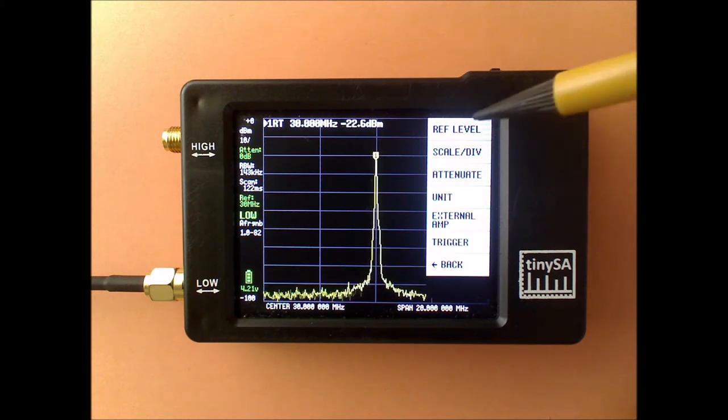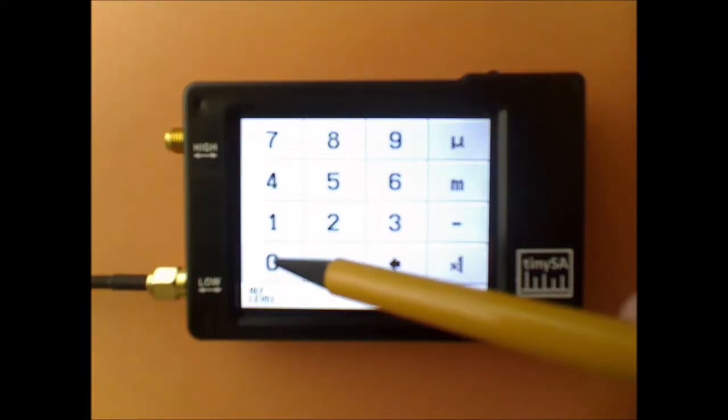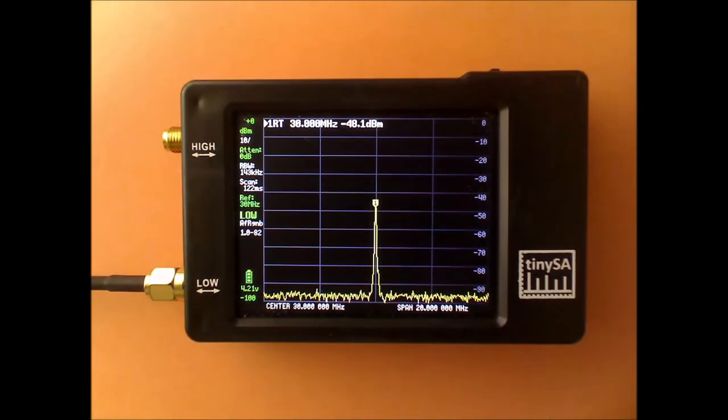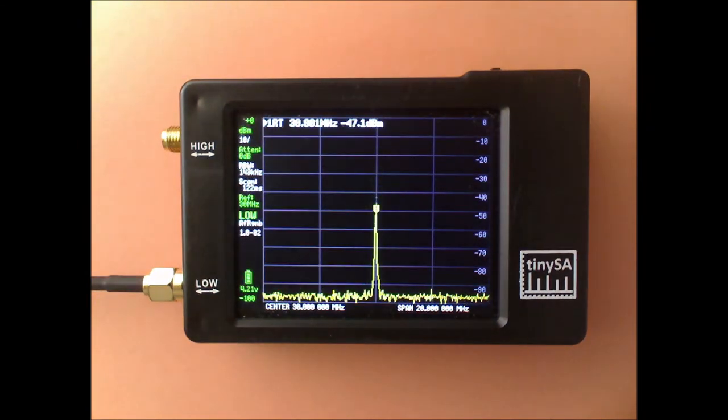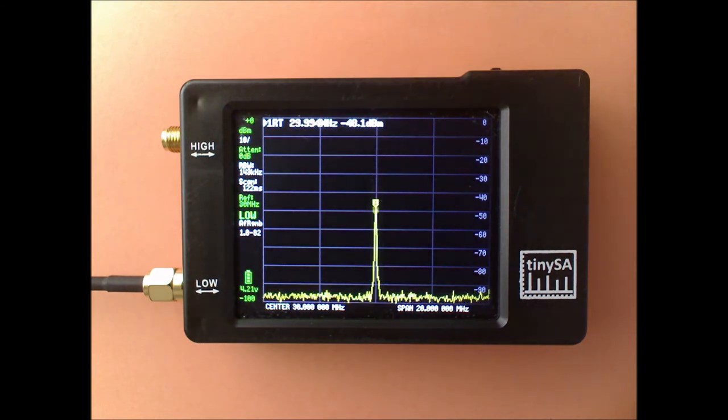In that case it makes sense to set the REF level to a manual level. For instance we set it here to zero and then you can easily see that the signal makes a certain change while the noise stays at the same level.